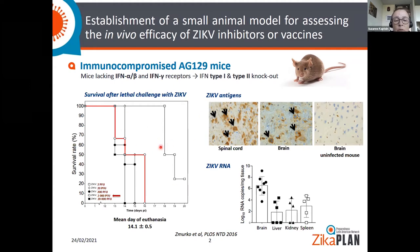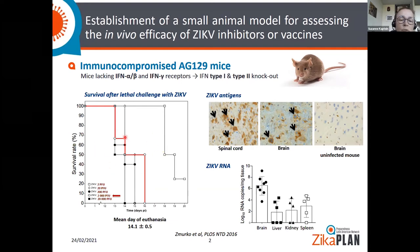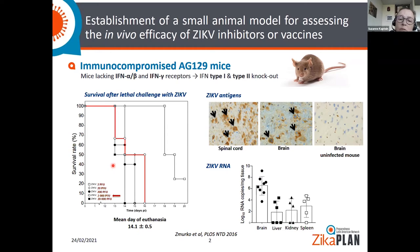If you infect these mice with a low inoculum, you will already see the development of disease, and mice had to be euthanized. If you give more virus, you get faster progression of the disease and mice had to be euthanized earlier. At the time of euthanasia, you could detect Zika in different tissues including the spinal cord, brain, liver, kidney, and spleen.